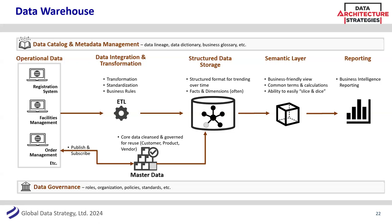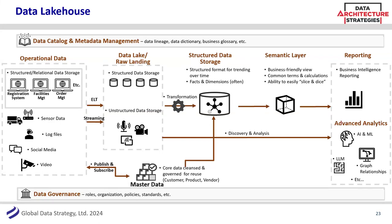Things have evolved since the data warehouse was the only option. We now have this idea of a data lakehouse. Some things are the same — you still have operational data — but not everything has to be designed upfront. You can have a data lake or raw landing area. And not everything is in structured systems — you can have log files, video, social media, and streaming data. You still may need the raw data for advanced analytics, but never forget your master data: you still want a single view of the customer whether you're doing AI or a warehouse. These building blocks of data management are valuable no matter what kind of analytics you're doing.